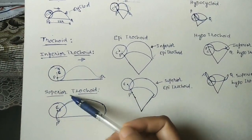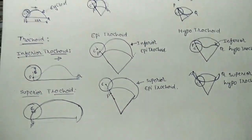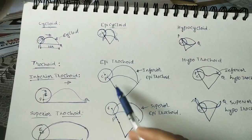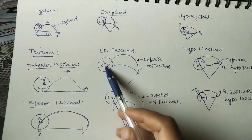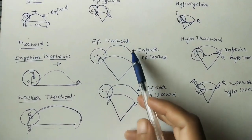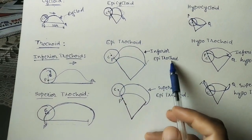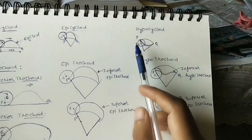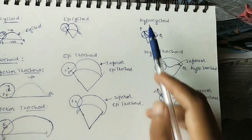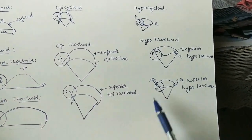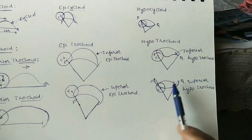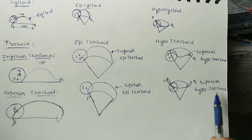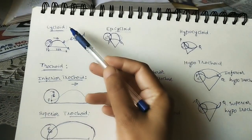Similarly, on a curved path — instead of epicycloid we get an epitrochoid. If P is inside the circle we get an inferior epitrochoid; if P is outside the circle it is a superior epitrochoid. Likewise for the hypocycloid case: if P is inside the circle it is an inferior hypotrochoid, and if P is outside the circle it is a superior hypotrochoid.